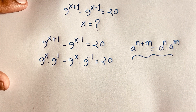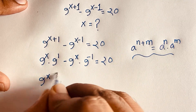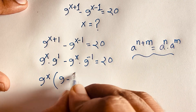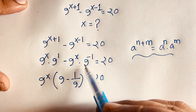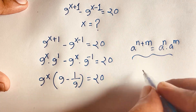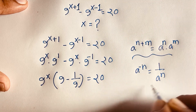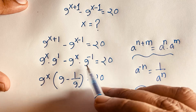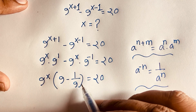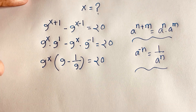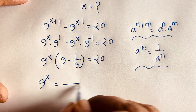Now in this expression, 9 to the power x is common, so we factor it out: 9^x times (9 minus 1 over 9) equals 20. We know that a to the power minus n equals 1 over a to the power n, so 9 to the power minus 1 equals 1 over 9. So we have 9^x times (9 minus 1/9) equals 20.